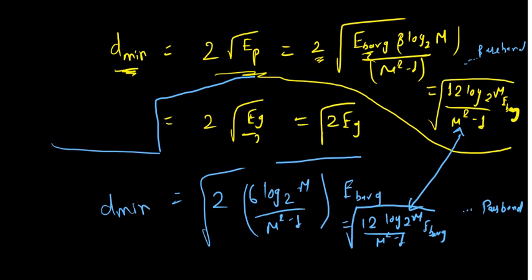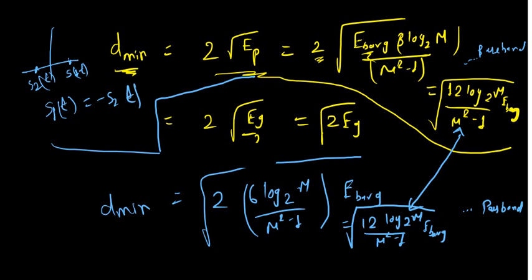One more term: when M=2, we have two signals s_1(t) and s_2(t) which are opposite of each other — s_1(t) = −s_2(t). Such signals are called antipodal signals in digital communication systems. That's it for this video — I hope you enjoyed it, thank you.